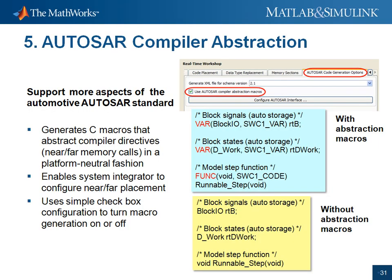Coming back to the PowerPoint slides, one of the other enhancements we've made is to add AUTOSAR compiler abstraction. For those not familiar, AUTOSAR is an automotive standard that describes how software components should be architected and integrated. We've supported AUTOSAR for several releases, and this is one of our enhancements. When you turn this option on, we add in the abstraction macros VAR and FUNCT in the generated code. This lets you configure near-far placements, so you can choose the location of data and code on a per-software component basis. This and other enhancements show our continuing support of AUTOSAR.